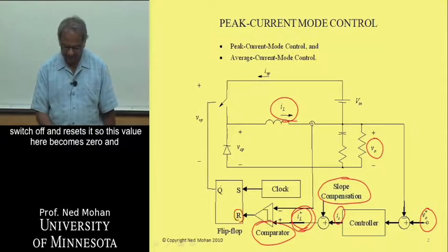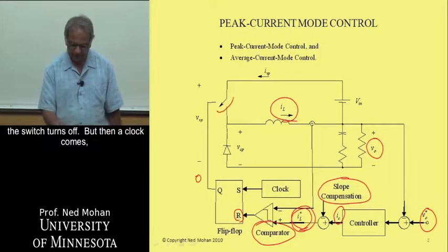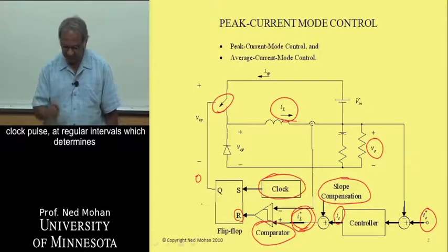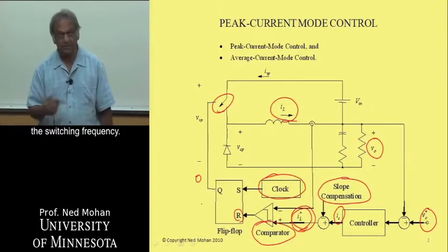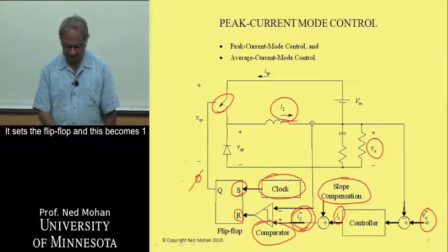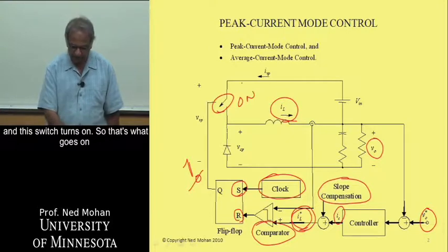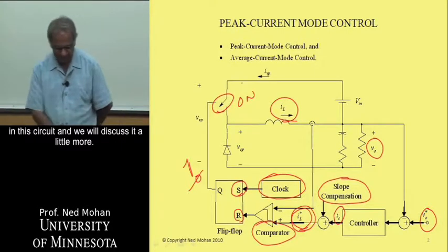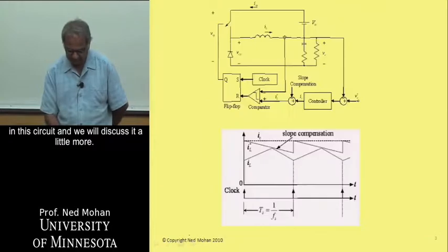When the switch is turned off, the flip-flop is reset so its output becomes zero. Then a clock pulse arrives at regular intervals, which determines the switching frequency. It sets the flip-flop, the output becomes one, and the switch turns on. That is what goes on in this circuit.